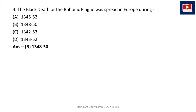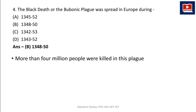More than four million people were killed in this plague. It reached England in June 1348, and by summer 1349 it had covered the entire country. In 1665, plague spread again in London, killing almost a quarter of London's population in just 18 months. So remember: the Black Death spread in Europe during 1348 to 1350.